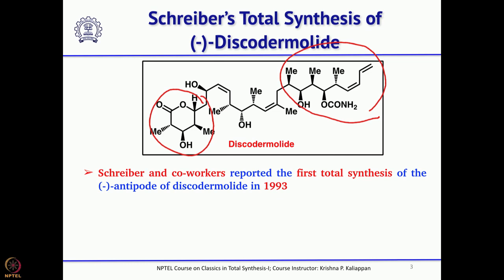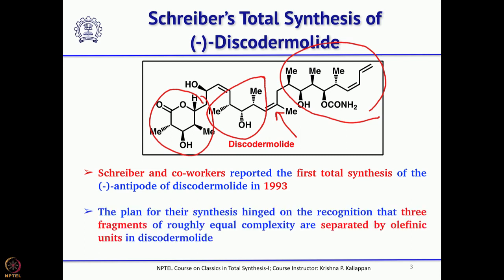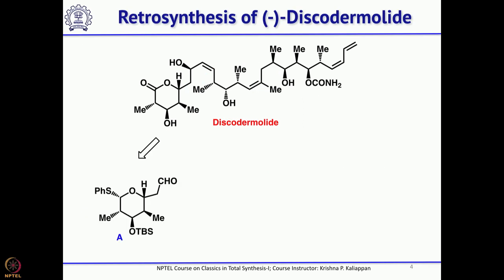In between you have three chiral centers, and all these are connected by a double bond. You can easily disconnect this molecule into at least three fragments, and that is what Schreiber and his group did. They disconnected this molecule into three fragments: fragment A, fragment B, and fragment C.